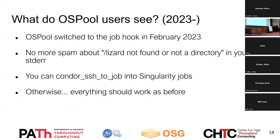That's the technical behind-the-scenes detail. Now for how this looks to the user: we deployed this in February of this year. For the most part, users shouldn't really see a difference — they still supply the Singularity image path in their job files. But one thing they might notice if they're checking their standard error files is that there's a lot less spam in there. Condor SSH job now actually works — I can't guarantee it'll work everywhere, but I can guarantee it won't fail everywhere either.